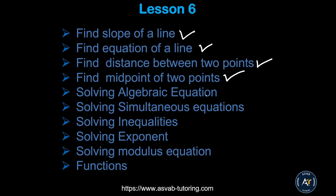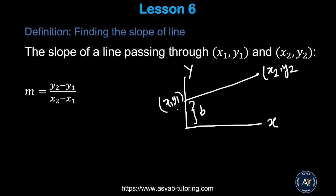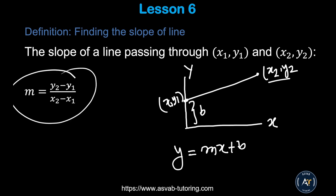You'll see five different types of algebraic equations and functions. First, we'll learn how to find the slope of a line. The equation of a line is y = mx + b, where b is the y-intercept — where it connects on the y-axis — and m is the slope. To find the slope given two points (x1, y1) and (x2, y2), use the formula: m = (y2 − y1) / (x2 − x1).